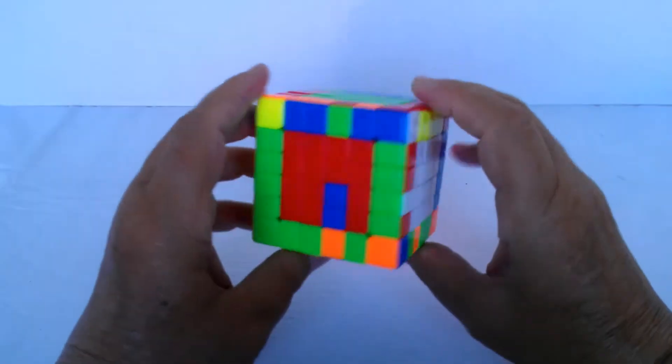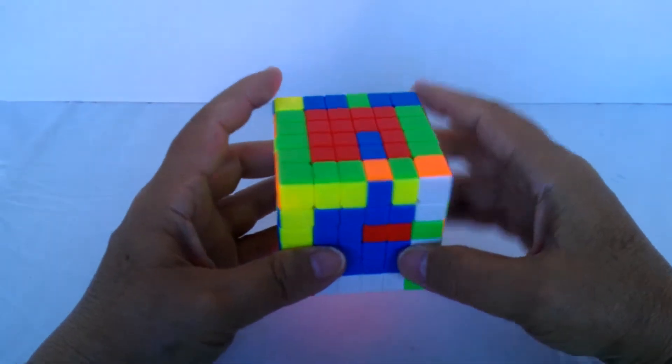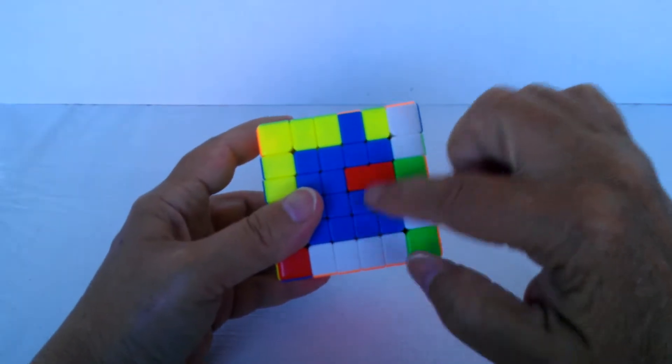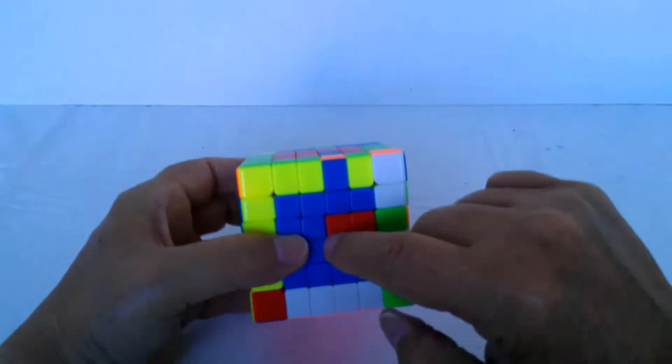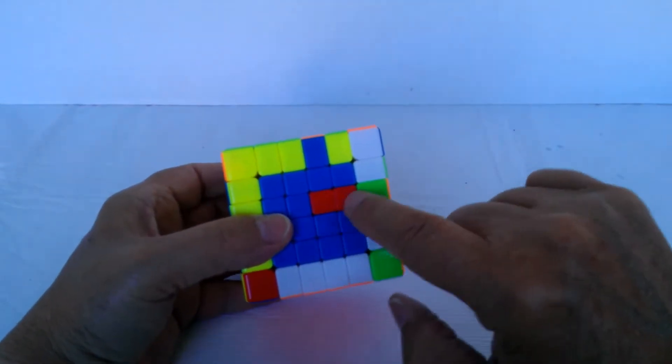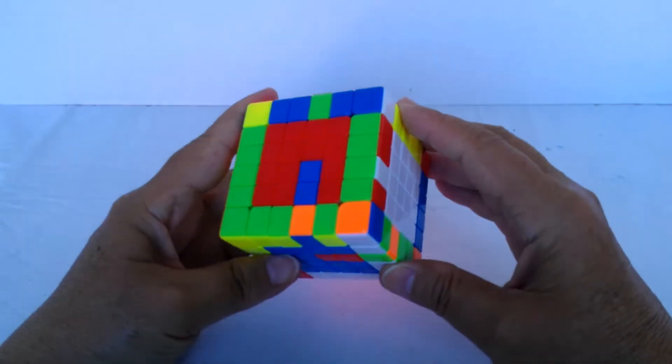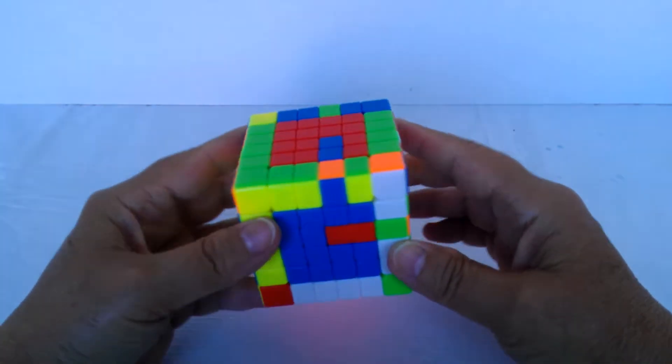Suppose you've done all of your centers and you're down to the last two. Again, you're down to the red and the blue, and you've got two pieces that belong in the other centers. They're together, however. You can actually commutate them at the same time.